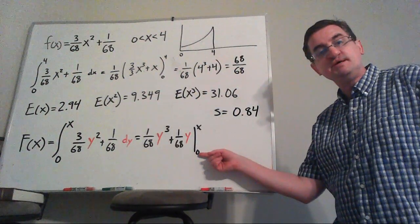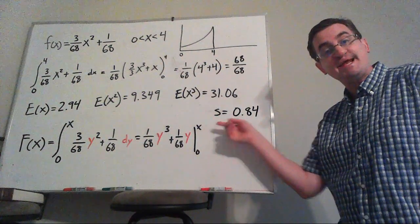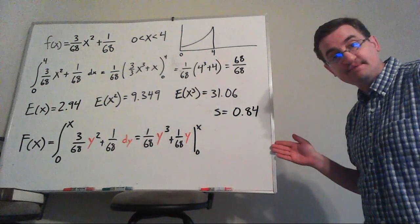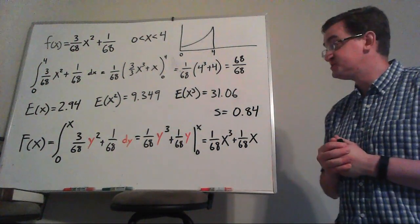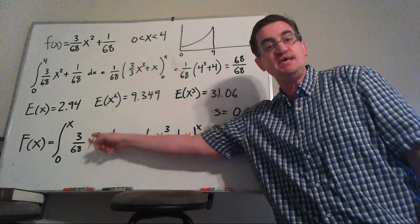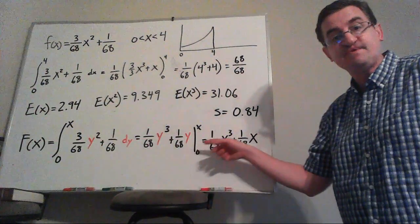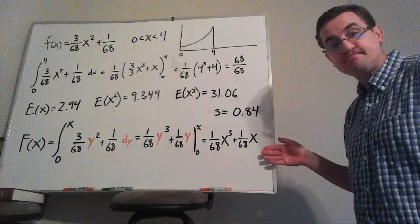And it won't surprise you in this example, plugging in 0 is just going to give me 0. But here's where I'm going to plug in that x value to get my capital F of x, where x represents how far I integrated in this distribution. So don't get confused if you see x's switching to y's. It's just so that I keep straight that I'm doing the integration first, and then I plug in the x as my top value in order to get my CDF.